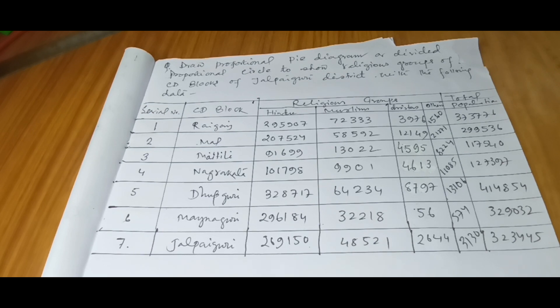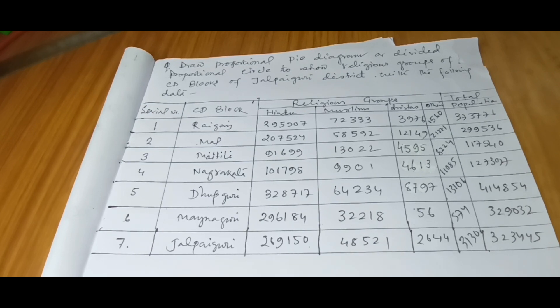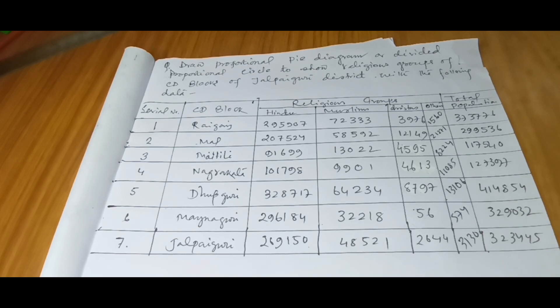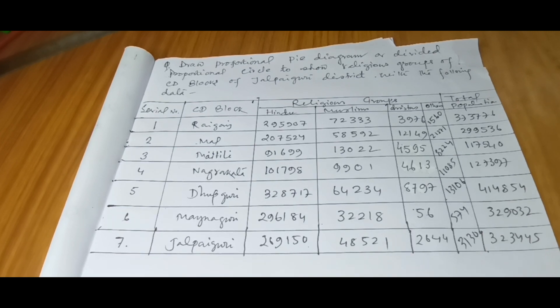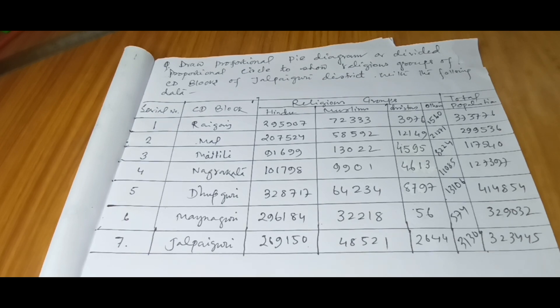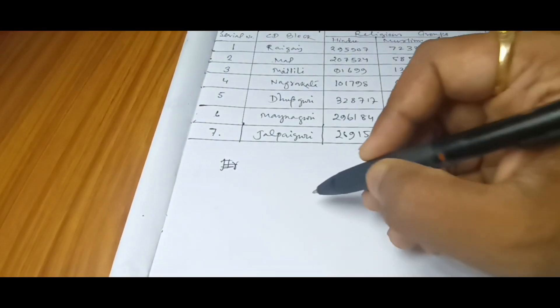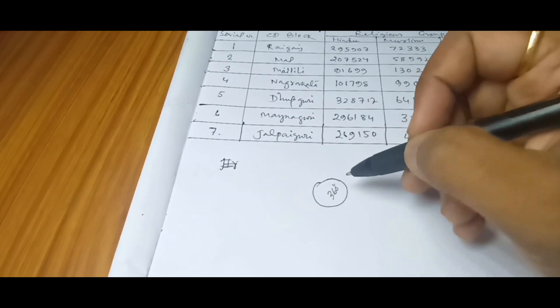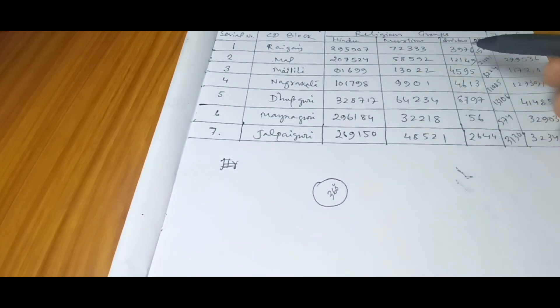This is the first step, first formula. And then we are also going to divide religious groups—that is why it is divided circle. Now there is a simple formula to divide the circle. We know that a circle means 360 degrees; a whole circle is 360 degrees.